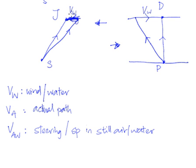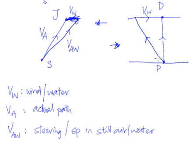According to our aeroplane example, this will be our actual path, labeled VA. And this is our aiming, so this is our VAW. We aim this way, the wind is blowing this way, and you end up there. In our river crossing example, we are at point P, really traveling in this direction — this is of course our VB, which stands for boat. And this is our aiming, our steering, VBW.